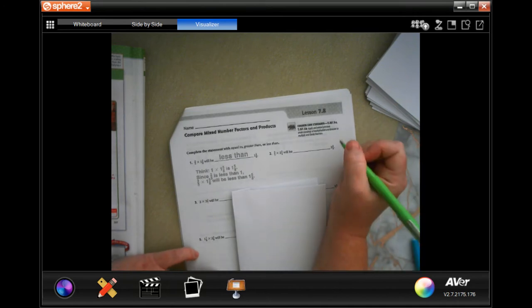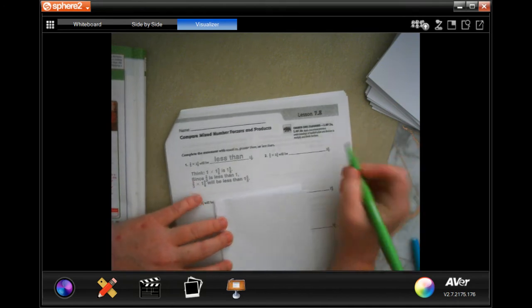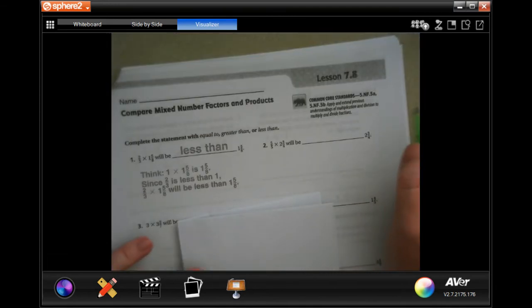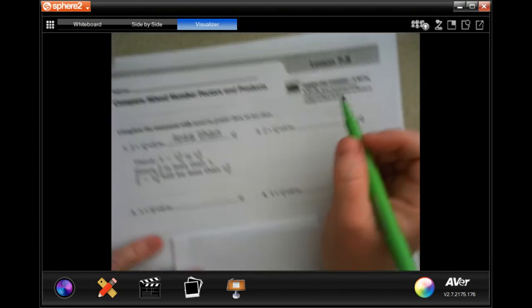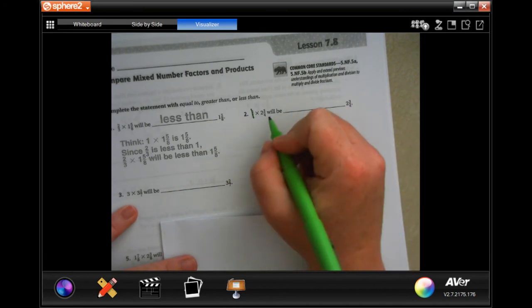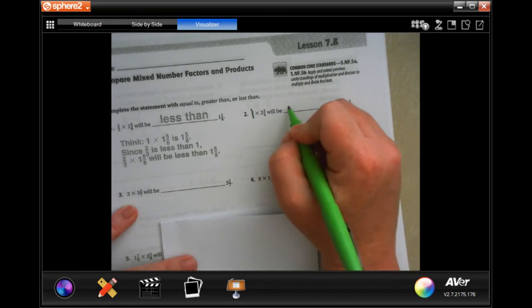If you want to know if the factors will be greater than, less than, or equal to the end number here, here's the thing with number 2. 5 over 5 is equal to 1. Anything times 1 is going to be itself, so it's going to be equal.